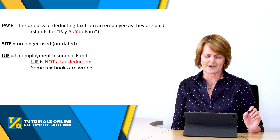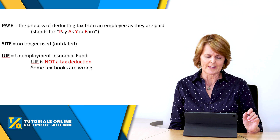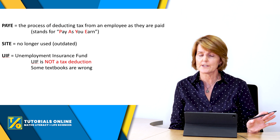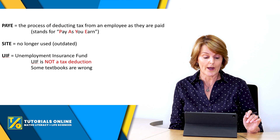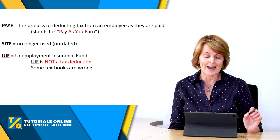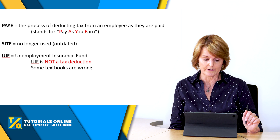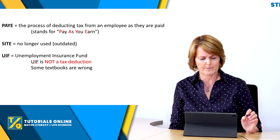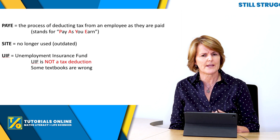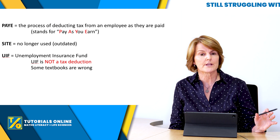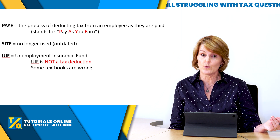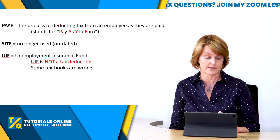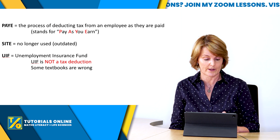In some books they speak about SITE — S-I-T-E. It's no longer used, so if you see that in a textbook, just ignore it; it's outdated. UIF stands for Unemployment Insurance Fund. It's not tax deductible, so you can't deduct it from tax. If some books show that, you must also ignore it, because UIF is not a tax deduction — that's one of the big changes that's taken place.